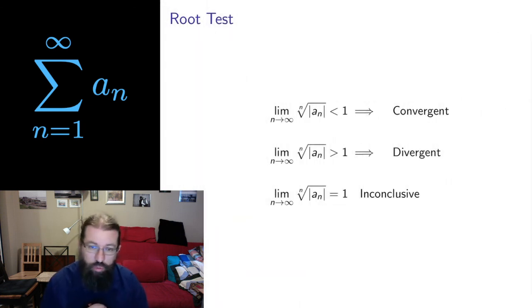And we have the very similar root test, where instead of ratios, we have roots. So if the limit of the nth root of the absolute value of the nth term is less than one, it's convergent; greater than one is divergent; and equals one is inconclusive.